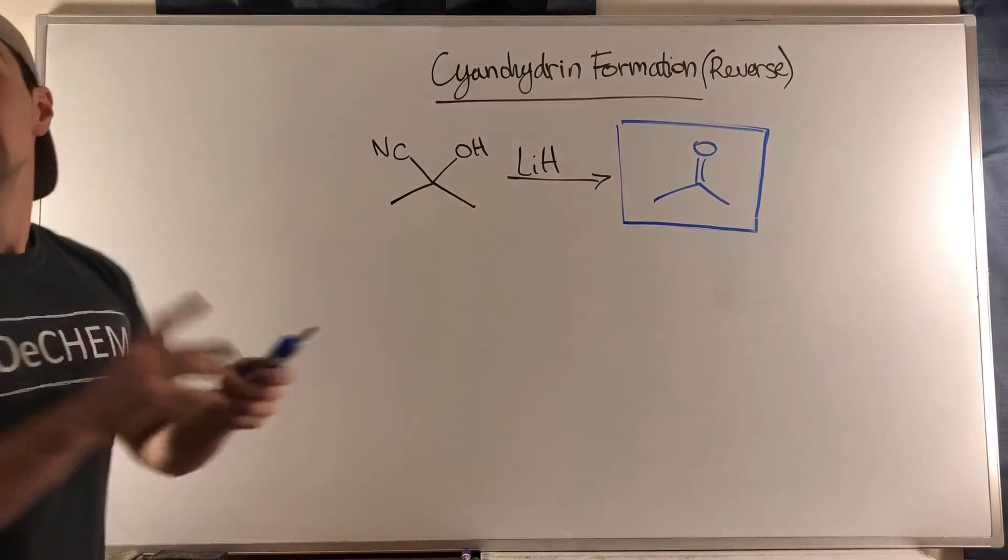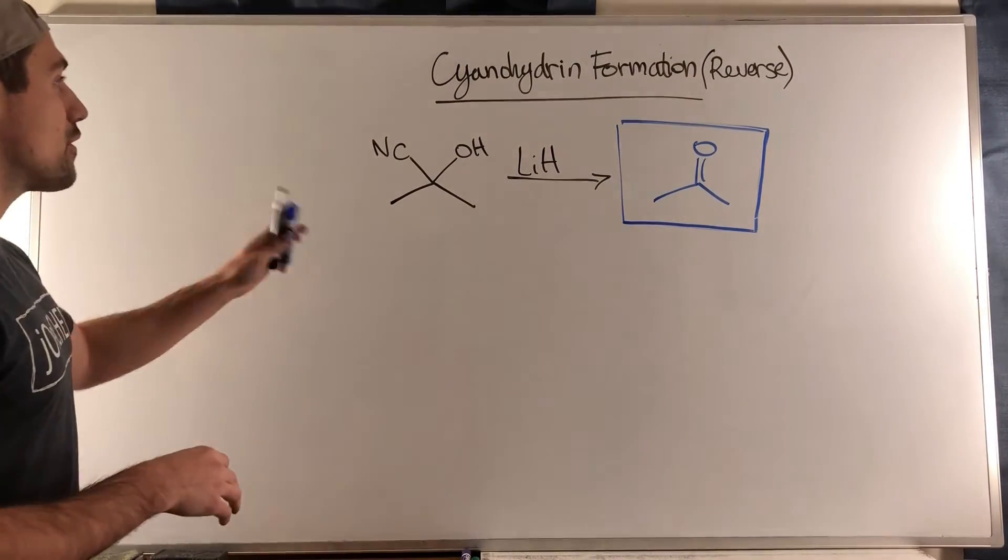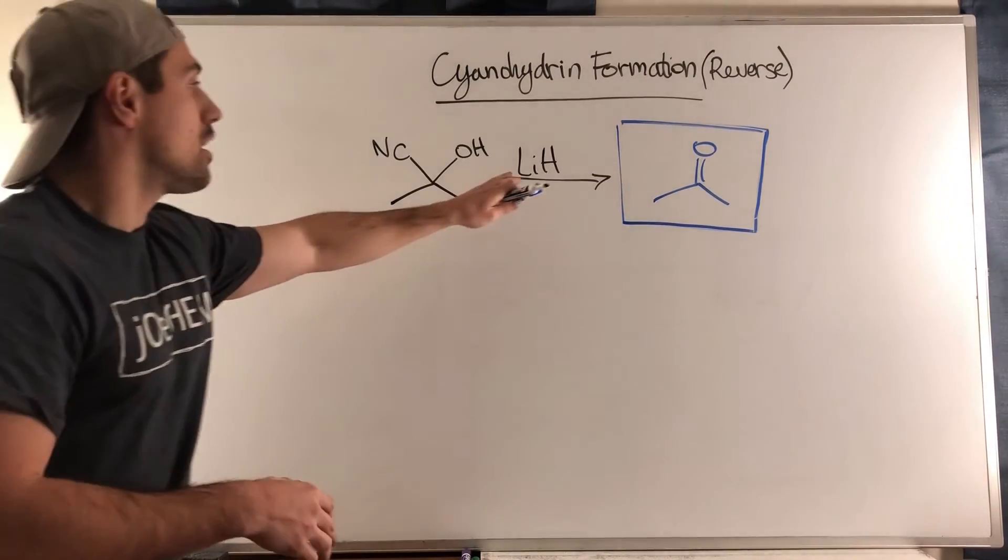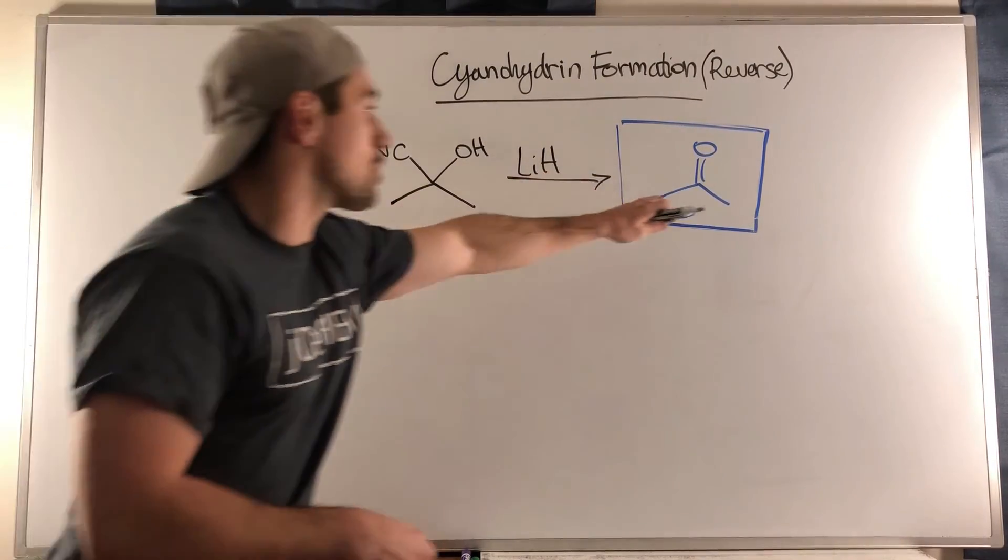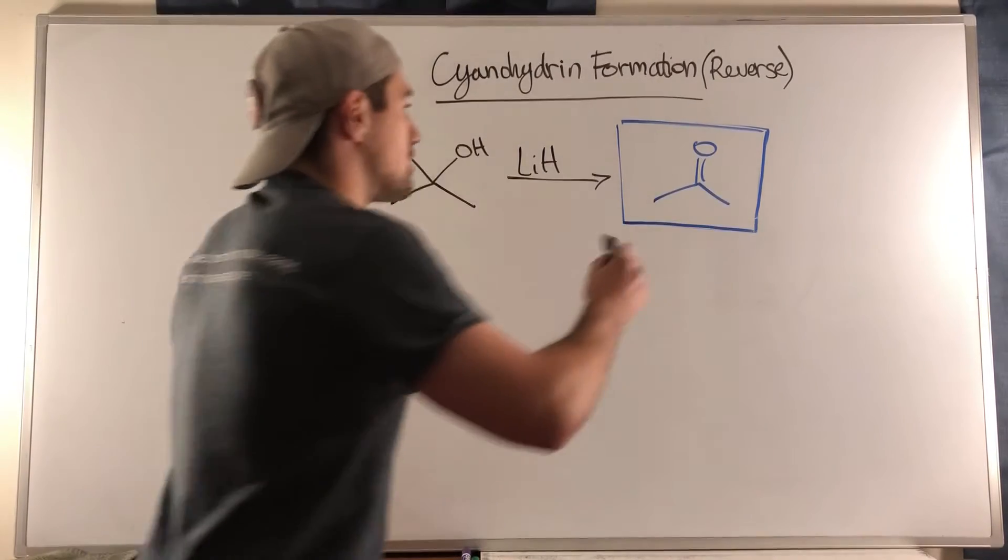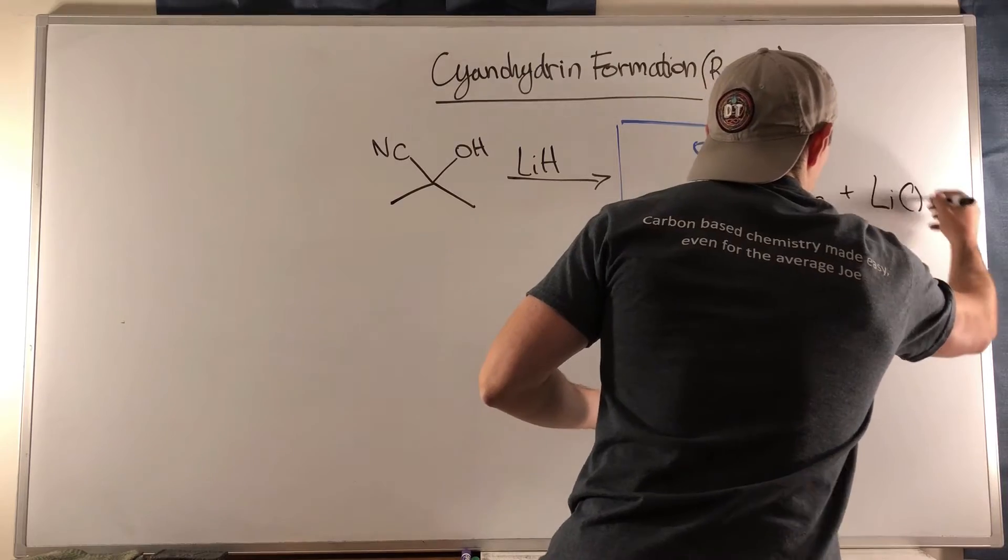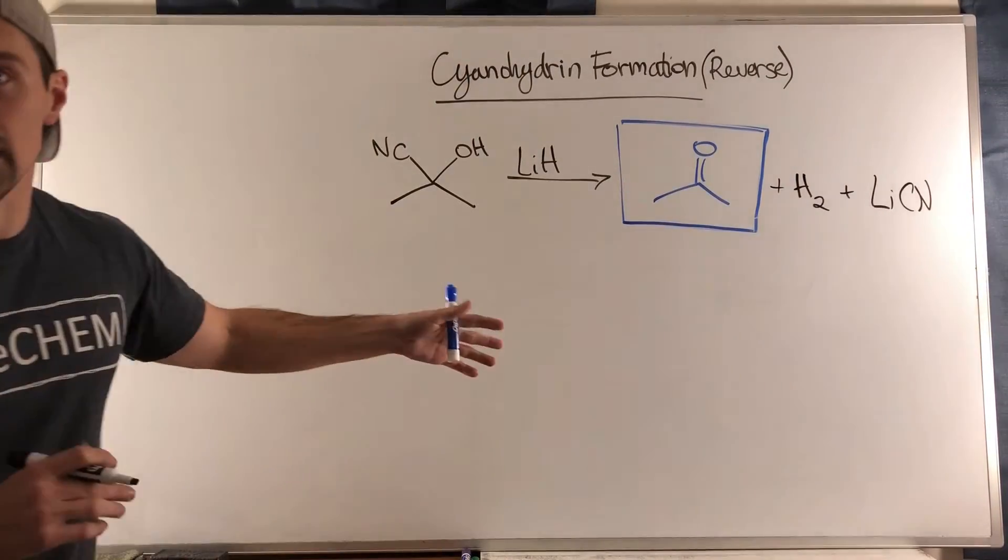What's going to happen first, you can see we have our cyanohydrin, we have lithium hydride, and then we're going to get our carbonyl. As byproducts you'll see we'll have hydrogen gas H2 as well as lithium cyanide in this particular example.